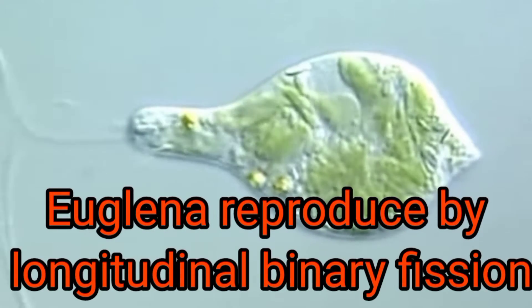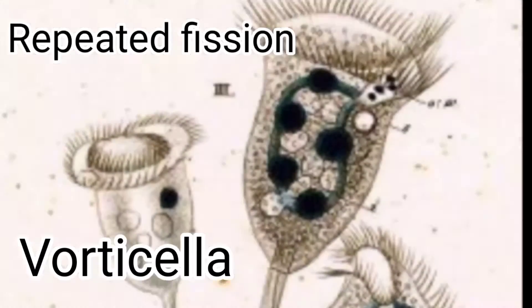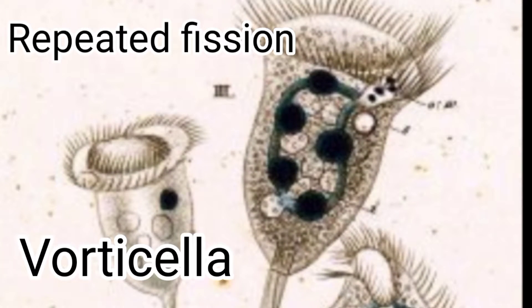Euglena reproduces by longitudinal binary fission. In the case of multiple fission, it produces four or many daughter individuals by equal cell divisions, and the young ones do not separate until the process is complete. This division is called repeated fission. Example: Vorticella.